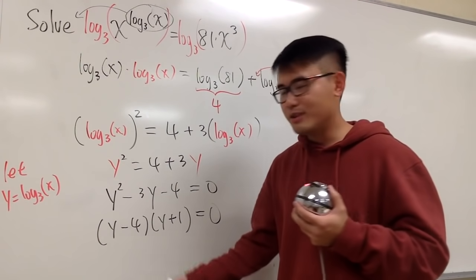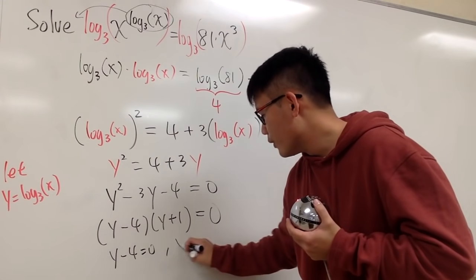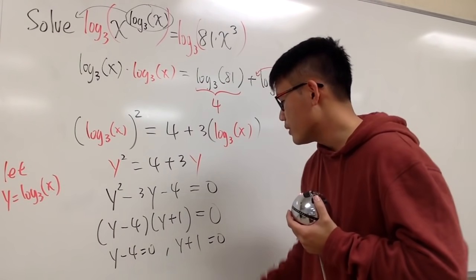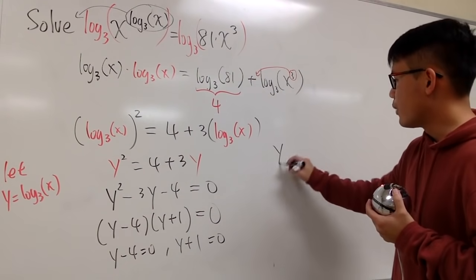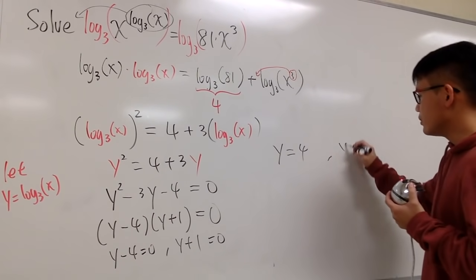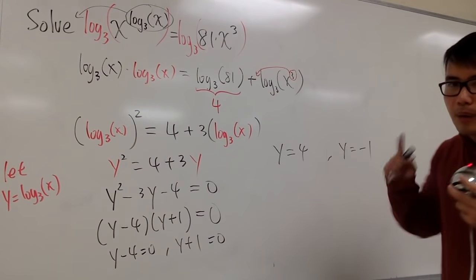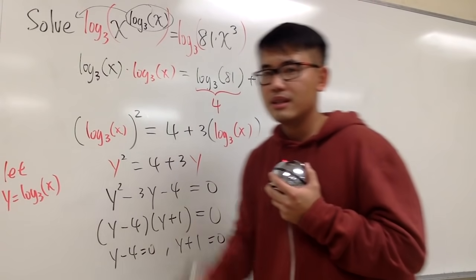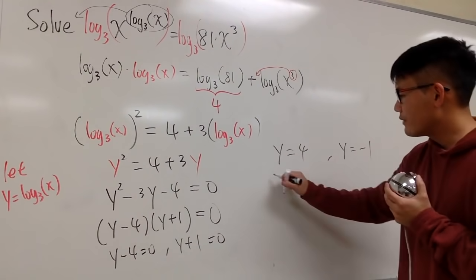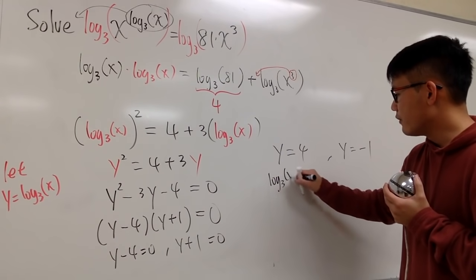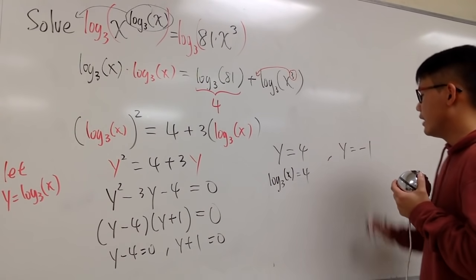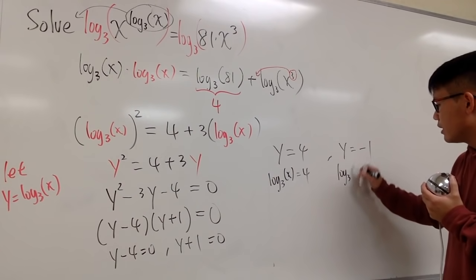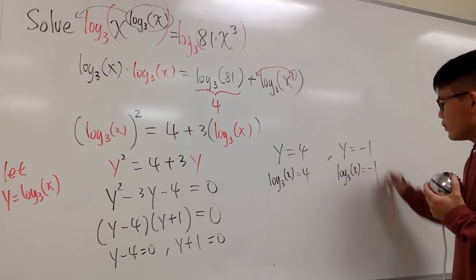You know y minus 4 equals to 0, y plus 1 equals to 0. First answer, y is equal to 4. Second answer, y is equal to negative 1. But we don't care about y, we care about x. So, right here, we will have log base 3 of x equals to 4, and log base 3 of x equals to negative 1.